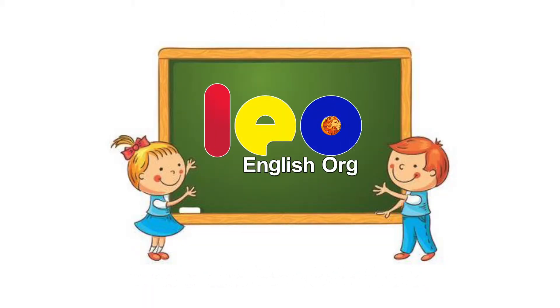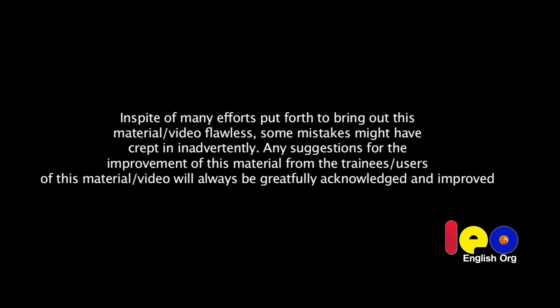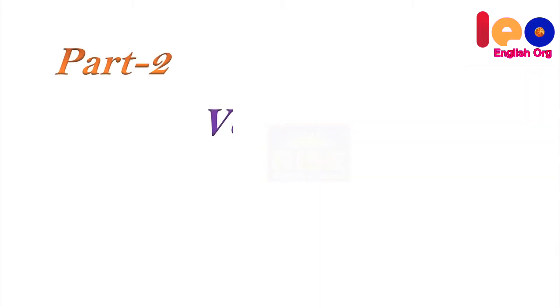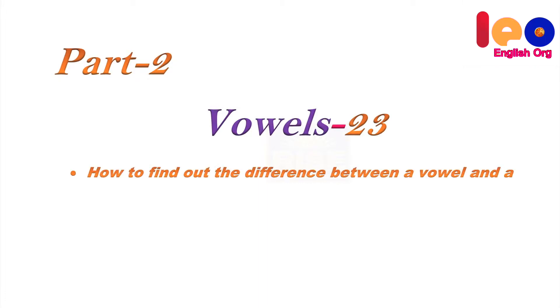Leo English organization. Part 2: Vowels. These are 23 in number. How to find out the difference between a vowel and a consonant sound.